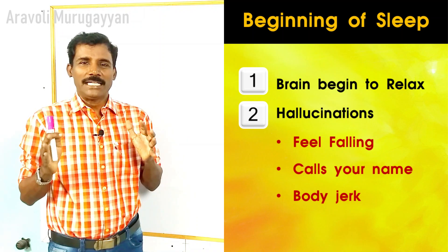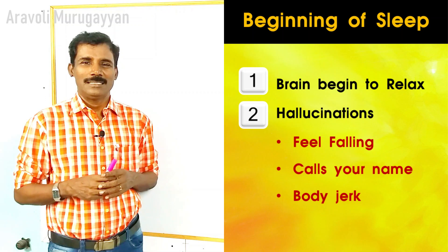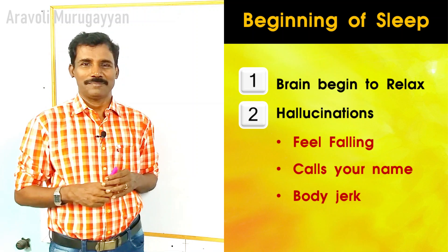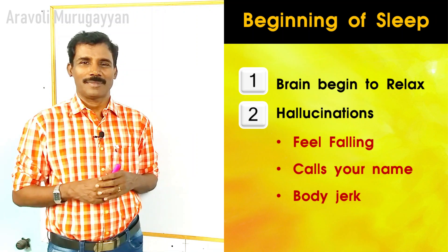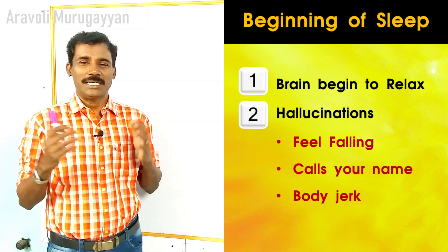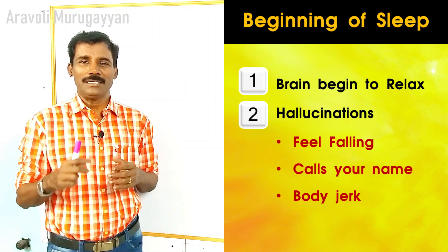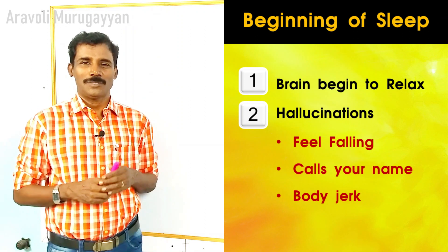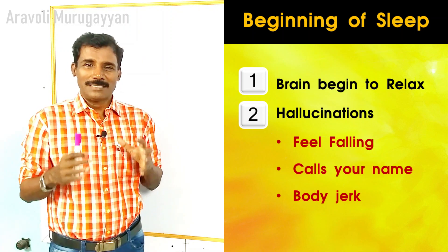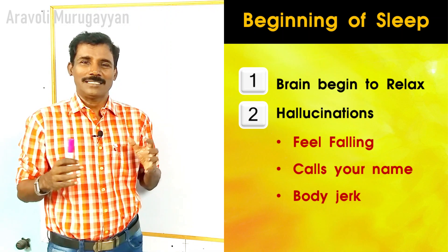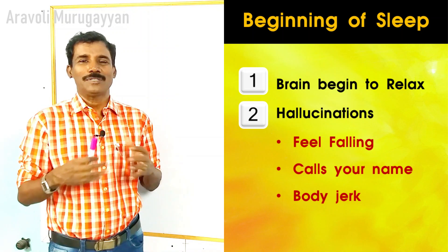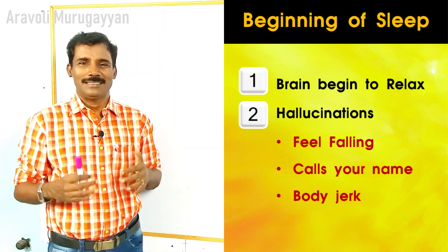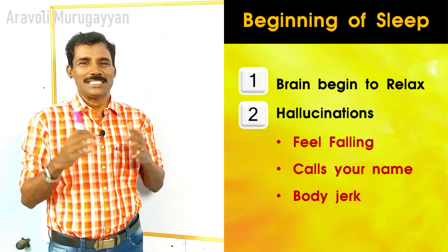In that preliminary stage, the brain will be relaxed and the person will be getting hallucinations — for example, suddenly feeling like they are falling from a building. Scientists say that in olden days our ancestors slept on the branches of trees because wild animals were on the floor at night. Since they couldn't sleep peacefully on branches, they would get up frequently, and this is recorded in our genes and carried through to today.